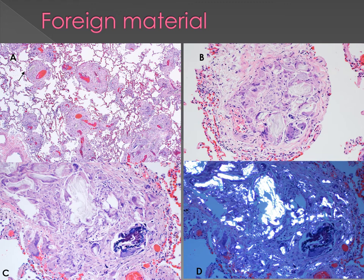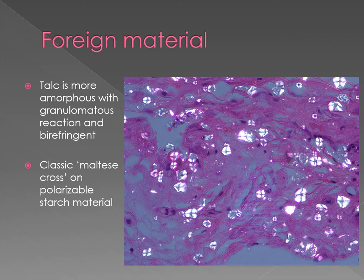Image D is when we polarize the lungs that have foreign material in them — you can see how this foreign material lights up like a Christmas tree, becoming very white and bright, and that's how we can tell there's foreign material present. Talc is really amorphous and granulomatous, which is what we were looking at. Maltese crosses seen on polarizable material indicate starch. Talc and starch are used as cutting agents in drugs that are then inhaled or injected.